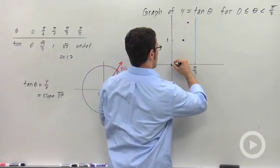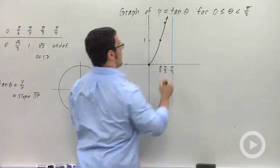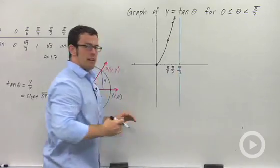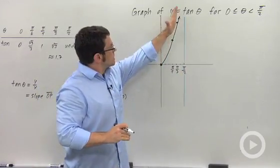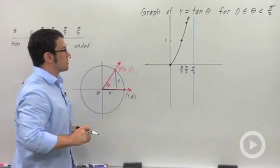And I draw my curve. It increases very rapidly, like that. And it actually has a vertical asymptote. It just increases more and more steeply as X approaches, or as theta, rather, approaches π/2.